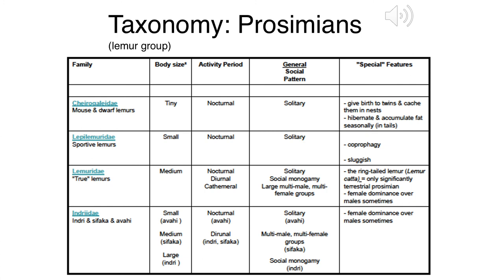Living lemurs range in body size from very, very small to what they consider large - maybe the size of a small dog, about 20 pounds. Looking back at the fossil record on Madagascar, there were once lemurs the size of black bears. Lemurs are very diverse and interesting because they developed in isolation on the island of Madagascar.